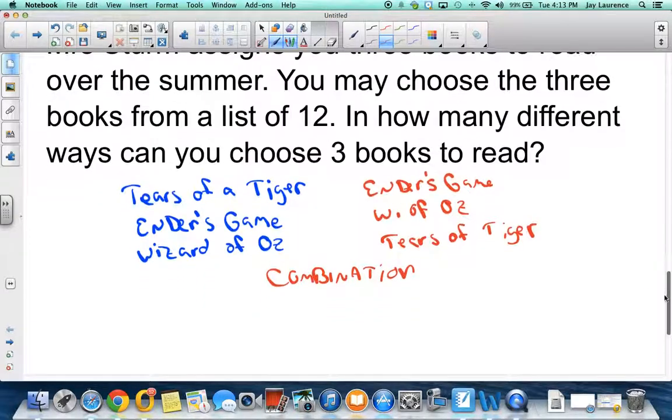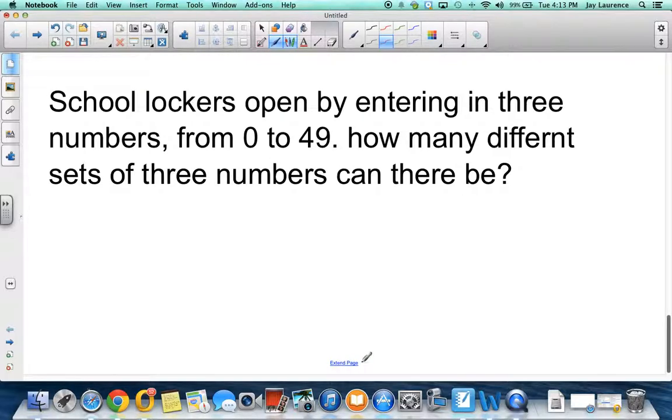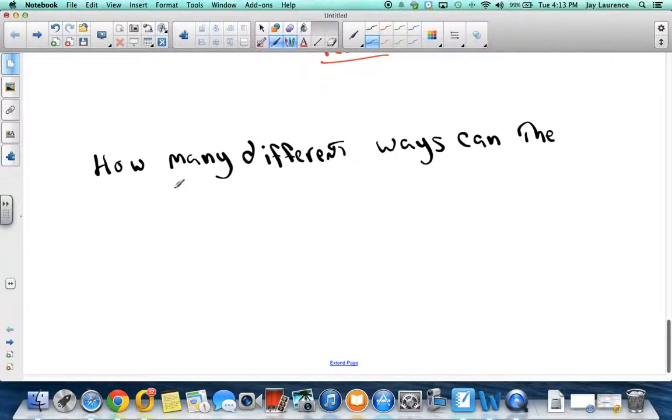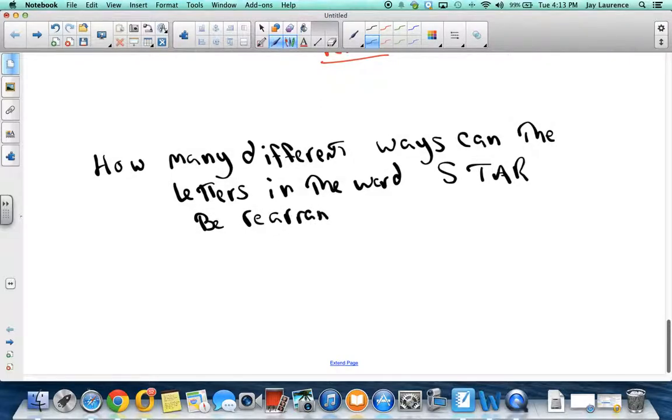I got one more for you. This one I already told you was a permutation, so I'm going to do one more. Let's say, how many different ways can the letters in the word STAR be rearranged? Now you have to write down an outcome. For example, hey, mommy, sing me, twinkle, twinkle, little star. And then change the order. Hey, mommy, sing me, twinkle, twinkle, little rats.